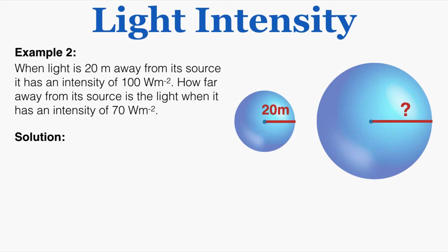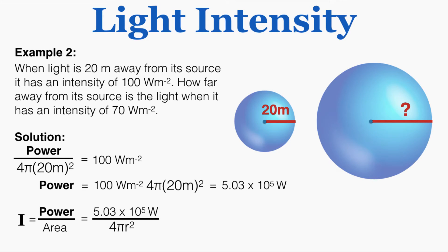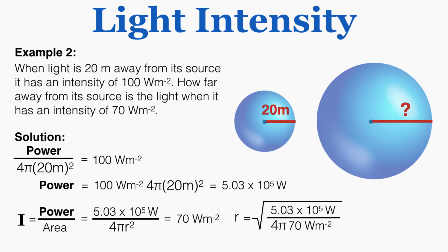Intensity example number 2: when light is 20 meters away from its source it has an intensity of 100 watts per meter squared. How far away is the light when it has an intensity of 70 watts per meter squared? Using the intensity equation at 20 meters, I solve for the power being delivered: 5.03 × 10⁵ watts. Then setting intensity equal to 70 watts per meter squared and solving for r gives 23.9 meters — the distance where the intensity equals 70 watts per meter squared.